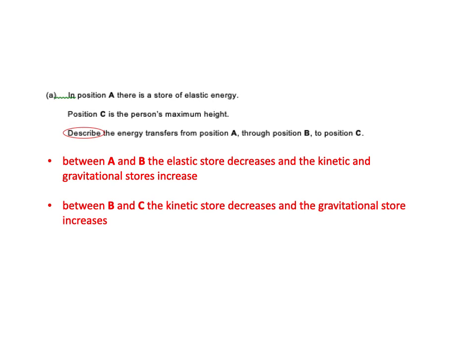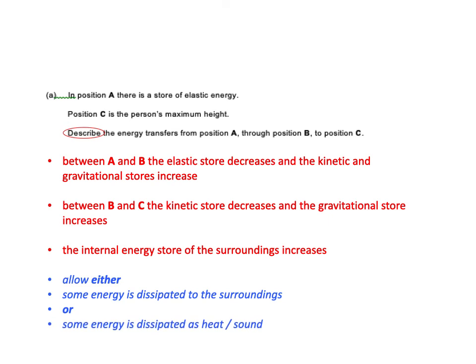My next mark comes from talking about what's happening between B and C. So that's where he's left the catapult, and he's sort of the highest position he's going to get to. So between those points, the kinetic store is decreasing, he's slowing down, he's reached his maximum speed. Gravity's fighting against him, so it's pushing him back, so he's decreasing his kinetic energy. But the gravitational store is increasing, because he's getting to the highest point. The final mark is about the internal energy store of the surroundings is increasing. That's going up, because there's friction between him and the air particles, so you get thermal energy forming there. So their store increases. You could have also said that some energy is dissipated to the surroundings, or some energy is dissipated as heat, which just means it's lost.